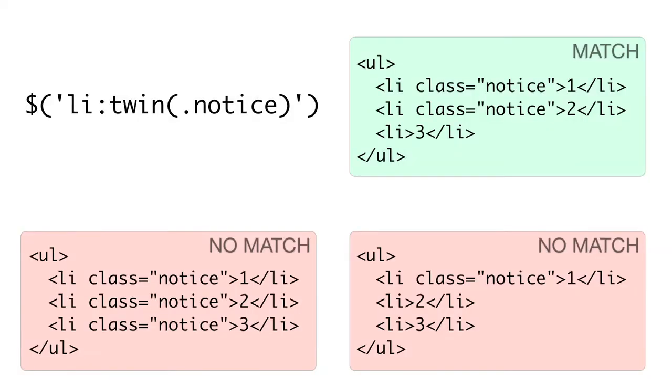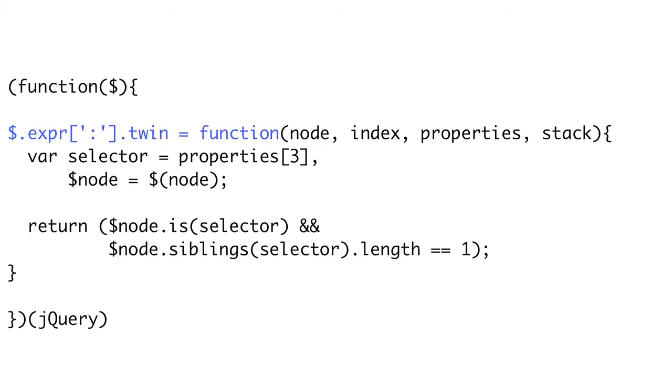Custom pseudo-classes can also take an argument, which allows the user to further customize how the selector will work. In our next example, we will create a pseudo-class called 'twin,' and this will take a selector string. It will only match if the element matches the selector string and has one and only one direct sibling that matches that same selector. Again, we will create a function called 'twin' on the colon property of the $.expr object. We get the selector string passed to 'twin' by getting the properties argument's fourth item, or index number three. We also create a jQuery version of our node. We then return true if our node matches the selector and has exactly one sibling that matches that same selector. Remember, your function will be called on a lot of elements — sometimes on every element on the page — so efficiency is important. You don't want to do things like AJAX calls or DOM manipulations, or your page will slow down and become unusable. Just use the function to determine if the element matches and return as quickly as you can.